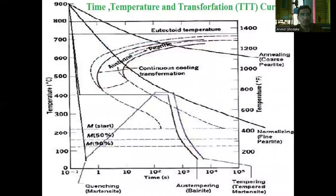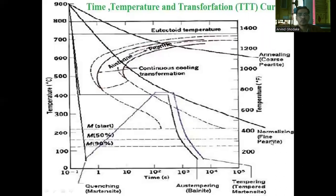Next is the time-temperature transformation (TTT) diagram. It gives a representation of the formation of pearlite, bainite, and martensite — representing the cooling of the metal, which is the transformation of austenite into pearlite, austenite into bainite (upper bainite and lower bainite), and the third is martensite. If sudden cooling occurs from 900 degree Celsius down to 40 degree Celsius, that cooling is called quenching. This curve shows normalizing, where fine pearlite is formed — that is air cooling, so the cooling is slow, meaning more time is taken compared with quenching.